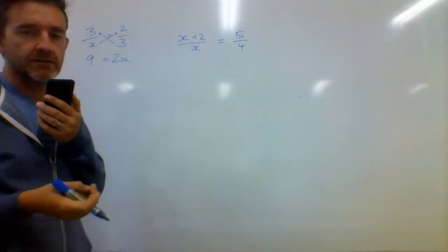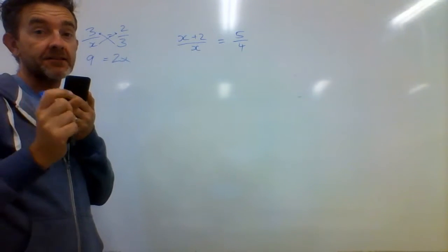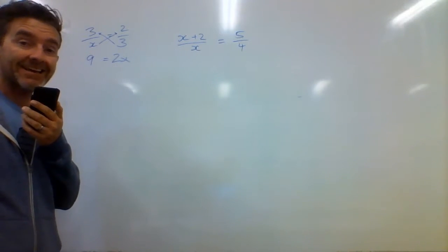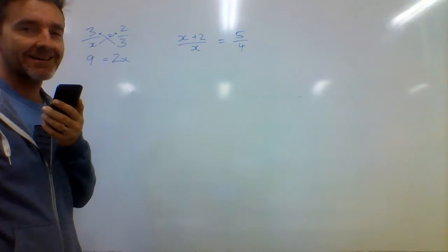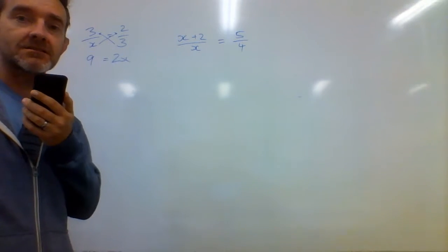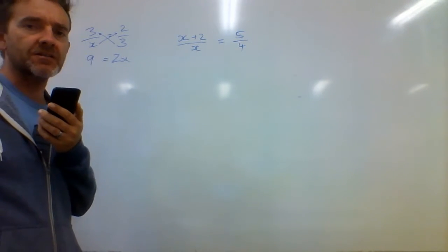Essentially what we're doing by doing this is we are making the denominators the same. We would give these a common denominator of 3X and because they've got a common denominator we can just forget about it. Anyway, if you don't know what I'm talking about, have a look at the other video because I kind of try and explain it a bit there.